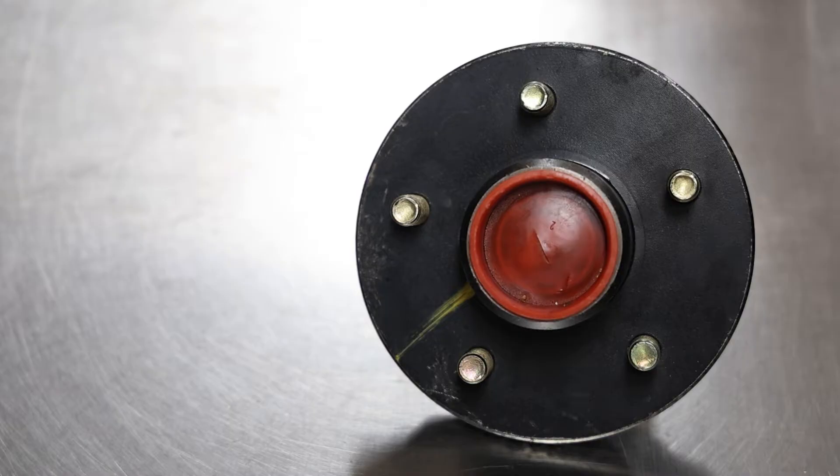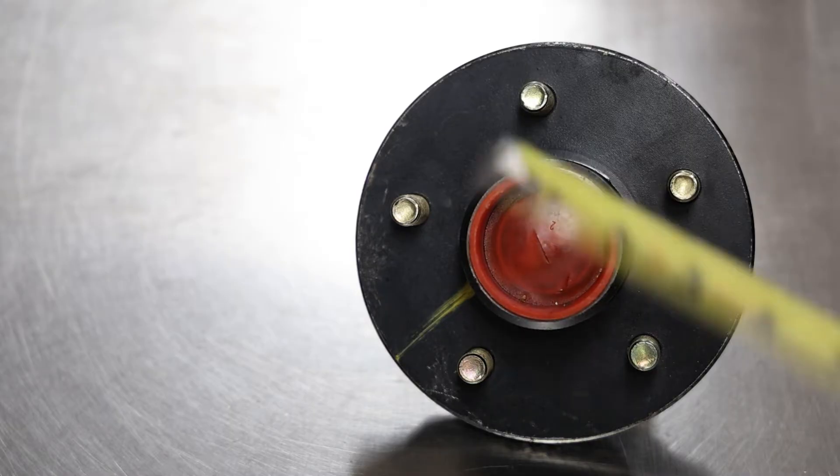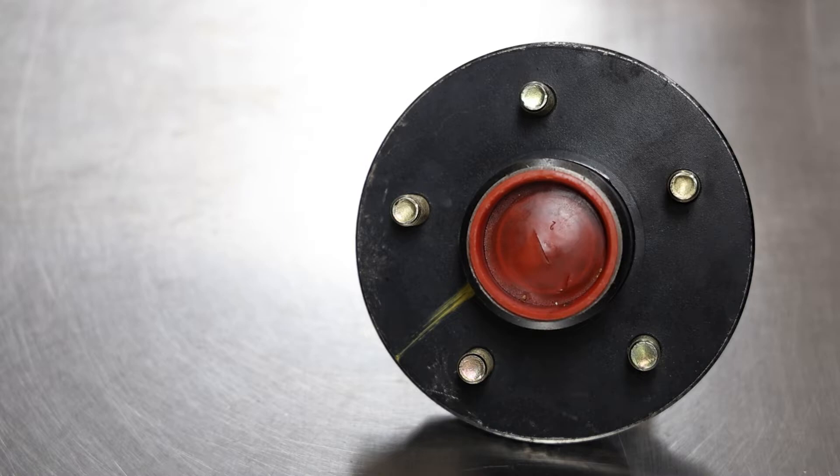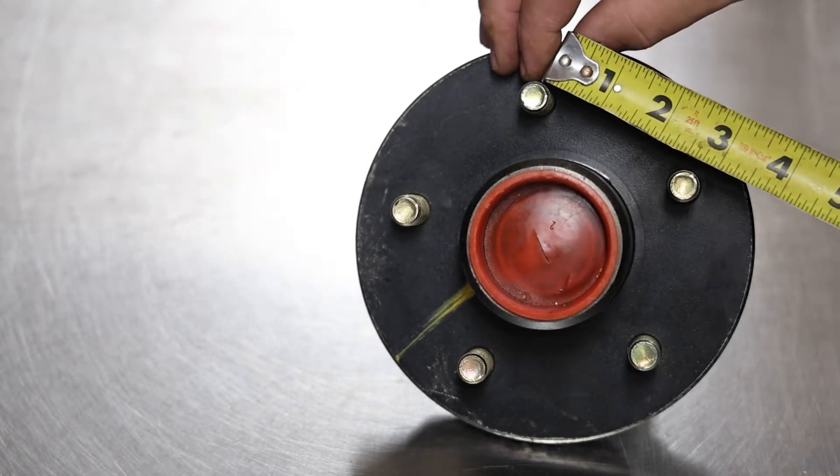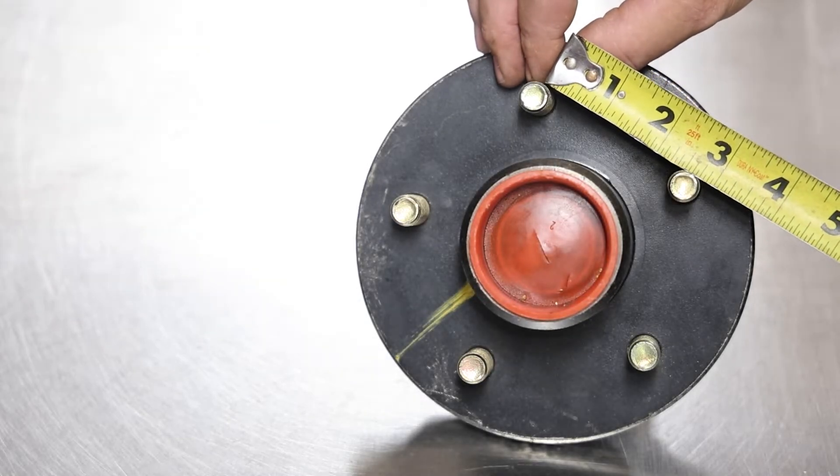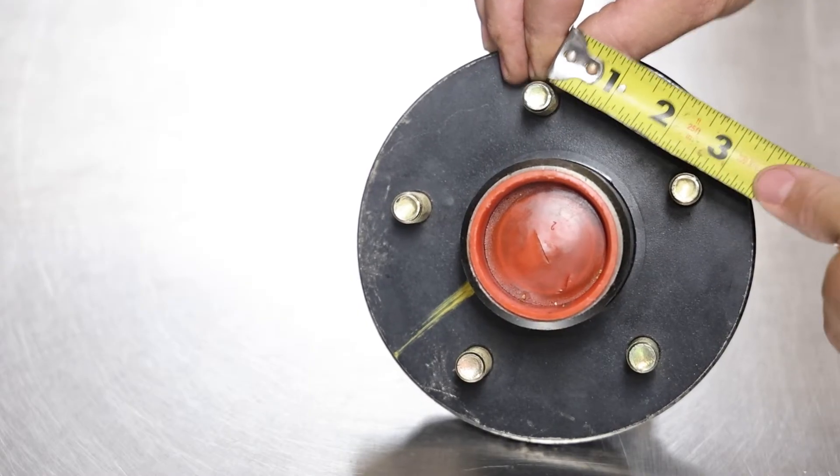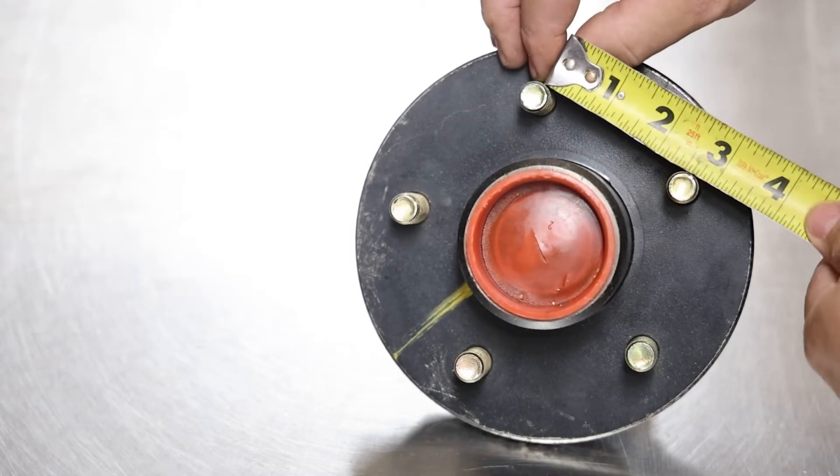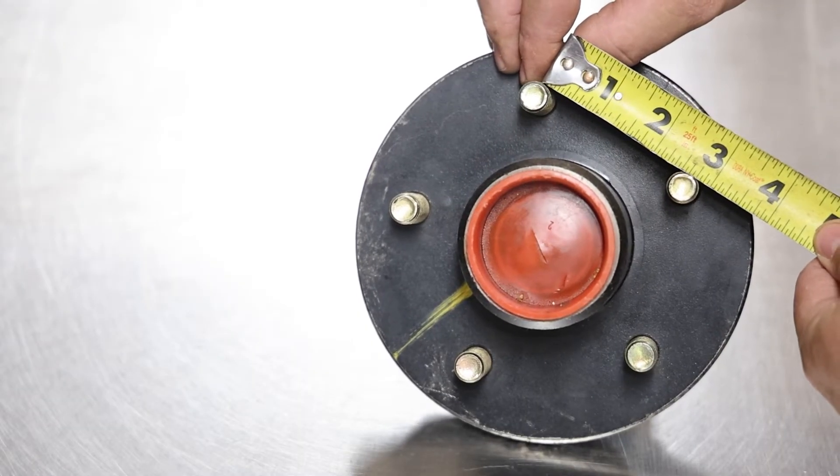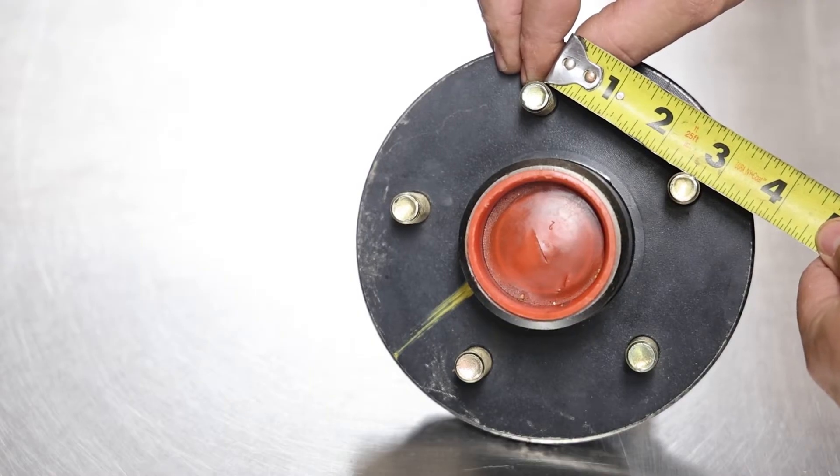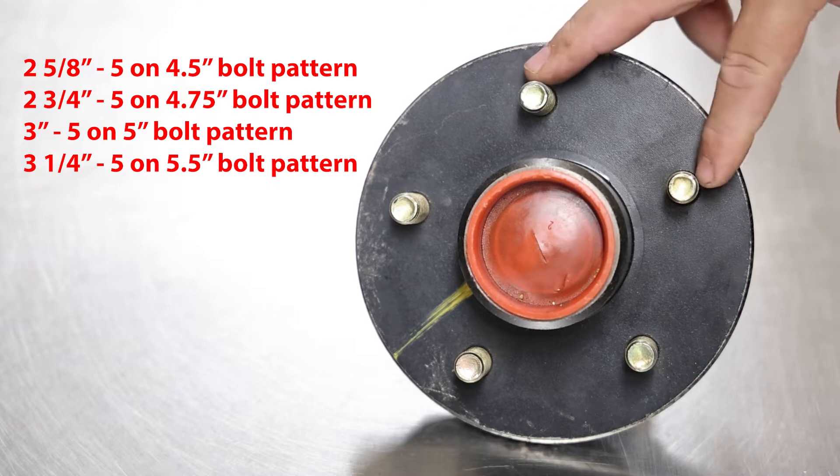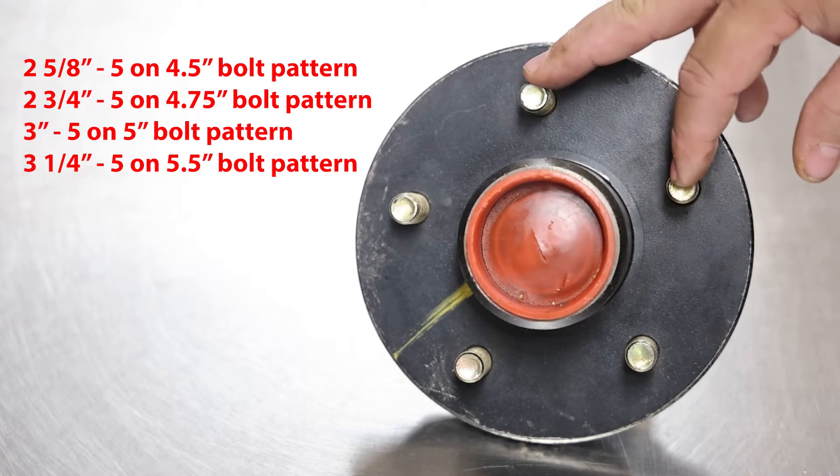All right, to measure your five lug bolt pattern using a tape measure, the first option, which some people find controversial but actually does work, would be to measure center of the first stud to the center of the second stud. So you want to measure center point to center point, and like on this hub here, from center point to center point, I'm getting two and five eighths. So two and five eighths tells me that this is going to be a five on four and a half bolt pattern.